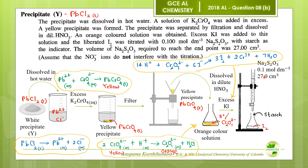When sodium thiosulfate is added, only iodine reacts with thiosulfate ions. Iodine reacts with thiosulfate ions to produce iodide ions and tetrathionate — during this reaction iodine is reduced to iodide and thiosulfate is oxidized to tetrathionate. By doing a back-calculation we can calculate the mass percentage of lead.